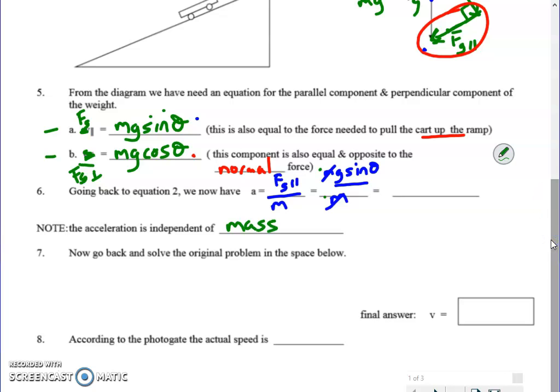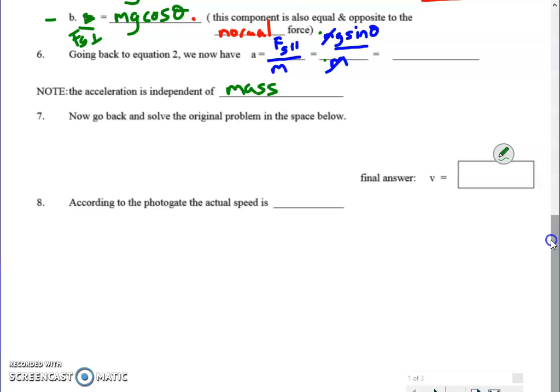So now we can go back and solve the original problem below. So this is what I want you to do on your own. You put the numbers I've given in, use the equation, show the equations here, and come up with a prediction for velocity based on the distance. Tomorrow in class we will test it out by rolling it down. Okay.